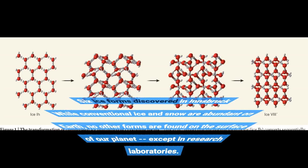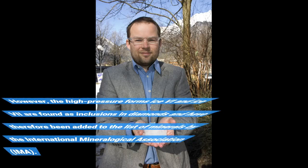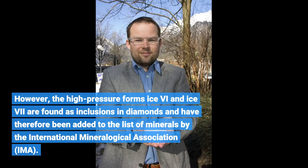Six ice forms have been discovered in Innsbruck. While conventional ice and snow are abundant on Earth, no other forms are found on the surface of our planet except in research laboratories. However, the high-pressure forms ice V and ice 7 are found as inclusions in diamonds and have therefore been added to the list of minerals by the International Mineralogical Association.